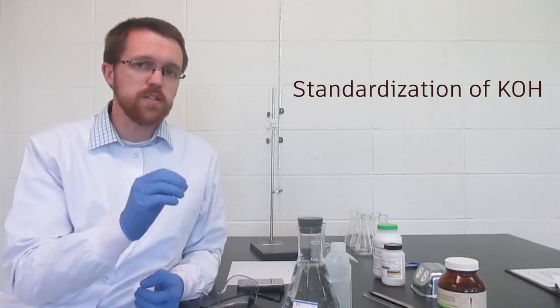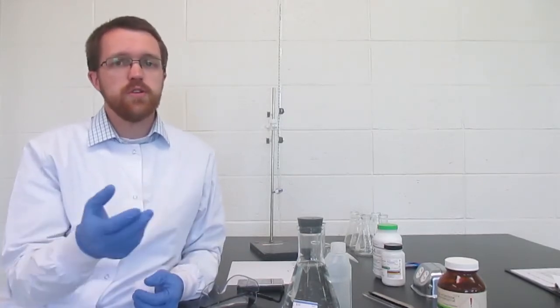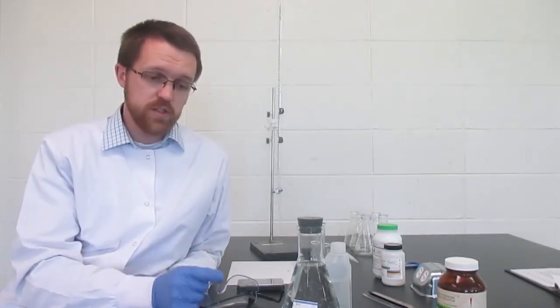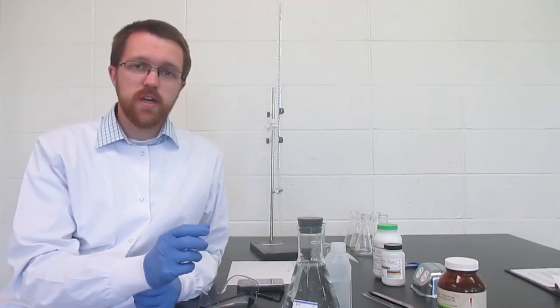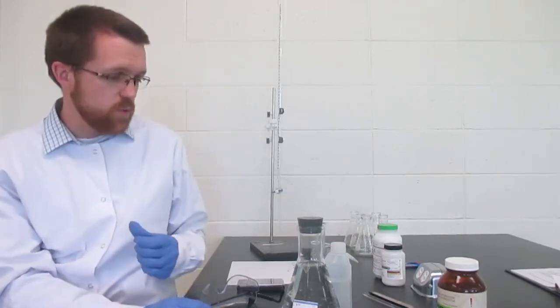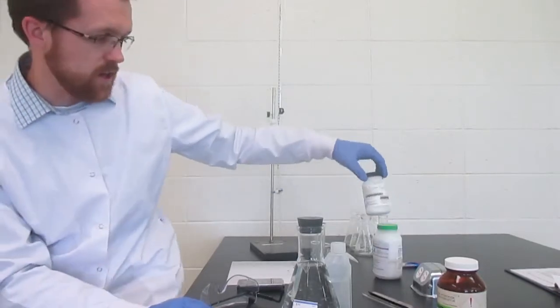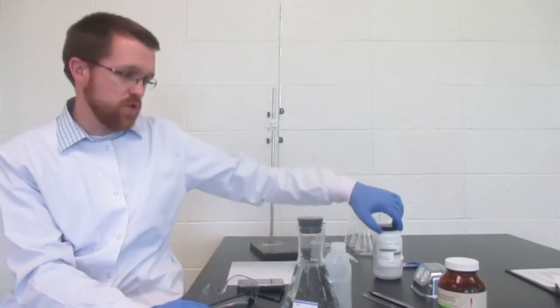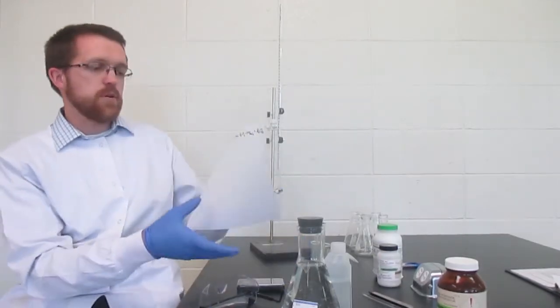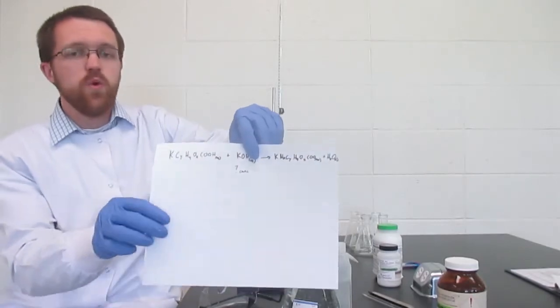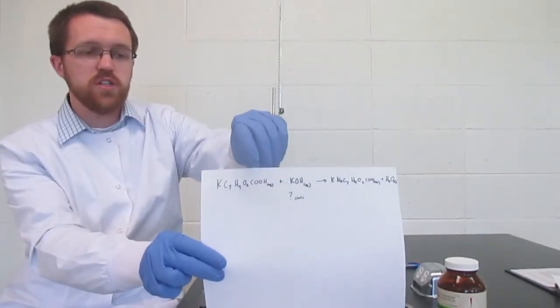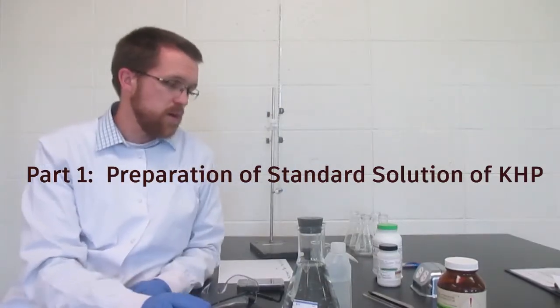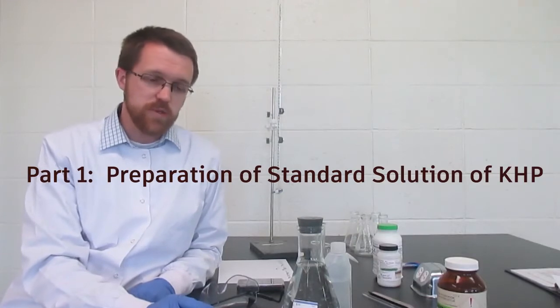In other words, we're finding out its precise concentration so that we would be able to use it in a future lab titrating with other things once we know its concentration exactly. This potassium hydroxide will react with KHP, our potassium acid phthalate. We need to know the precise concentration of this. If we look at our balanced chemical equation, we will have one unknown concentration. That means the other concentration needs to be precisely known.